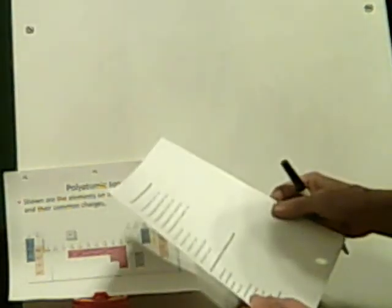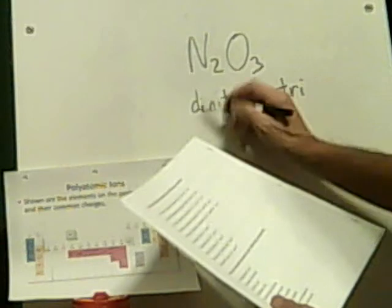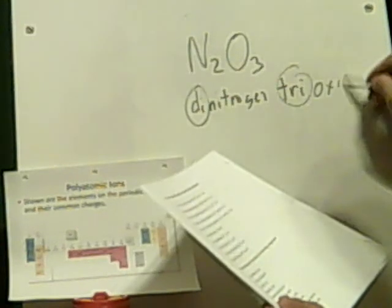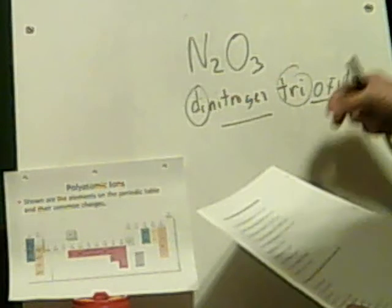Dinitrogen trioxide — this is pretty obvious. It's going to have two nitrogens and three oxygens — the 'di' and 'tri' give it away. That's a very self-explanatory way of giving the formula. If they just said 'nitrogen oxide,' there's more than one form — like laughing gas, nitrous oxide, which is just NO. So dinitrogen trioxide is going to be N2O3. Yes, that's correct.